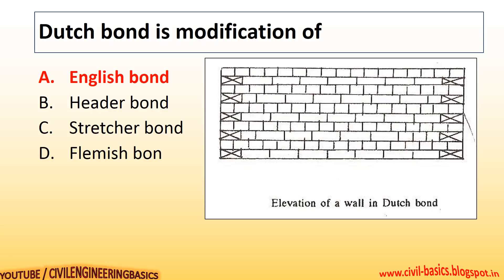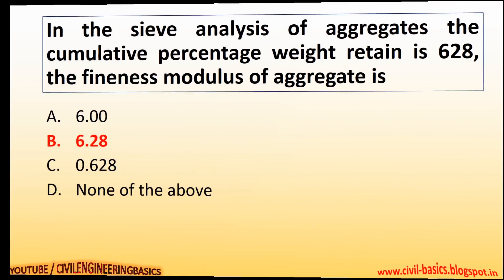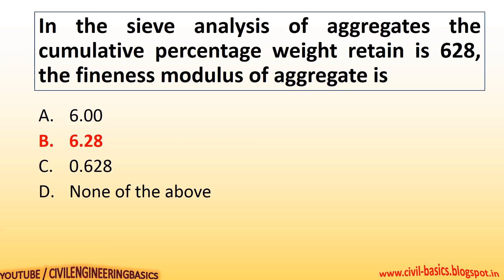In the sieve analysis of aggregates, the cumulative percentage weight retained is 628. Therefore, the fineness modulus of the aggregate is 6.28.